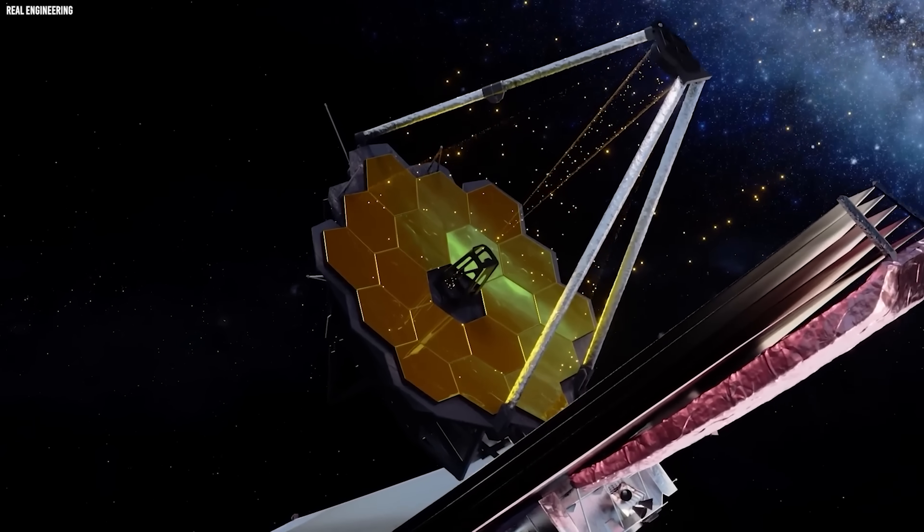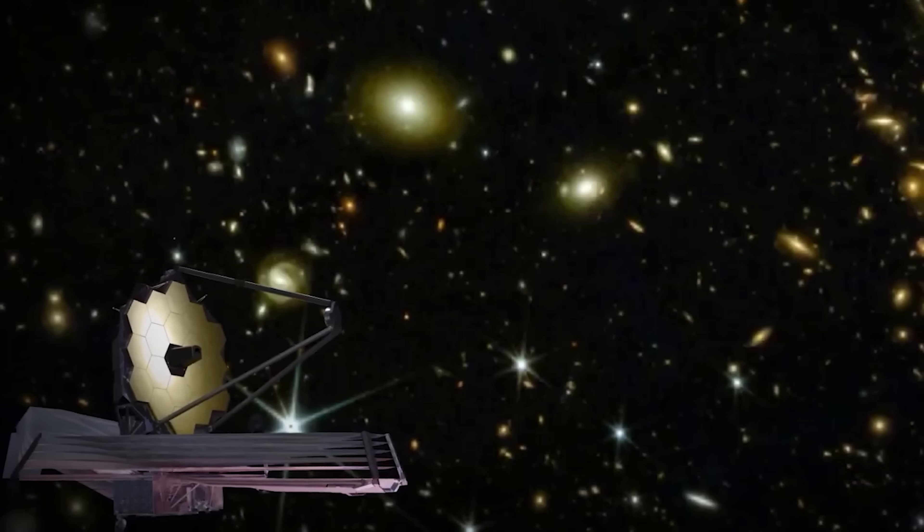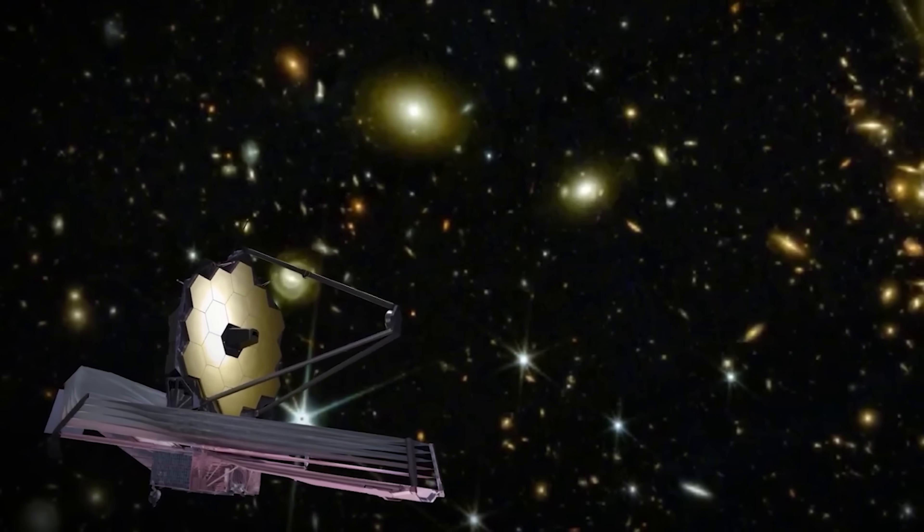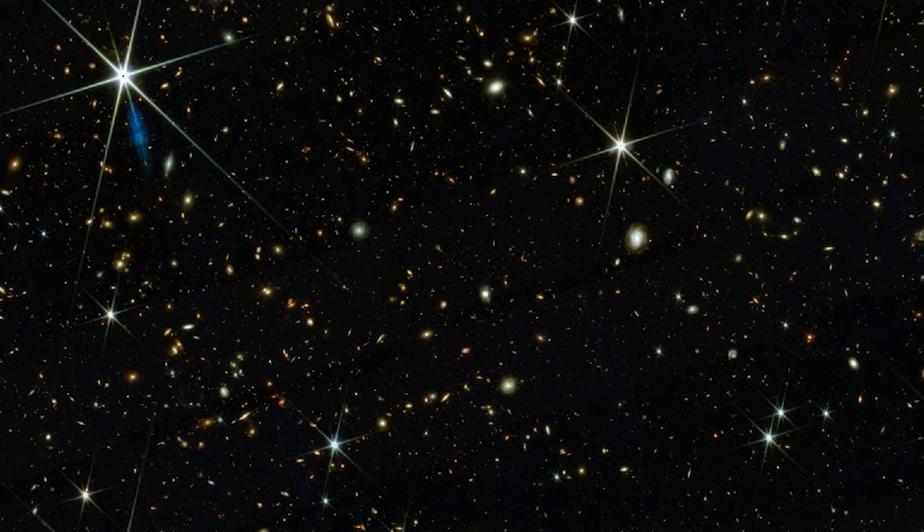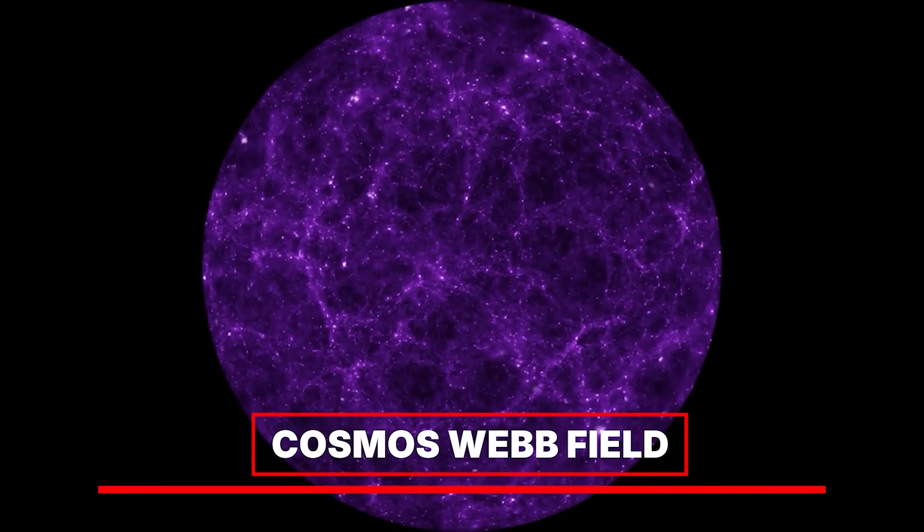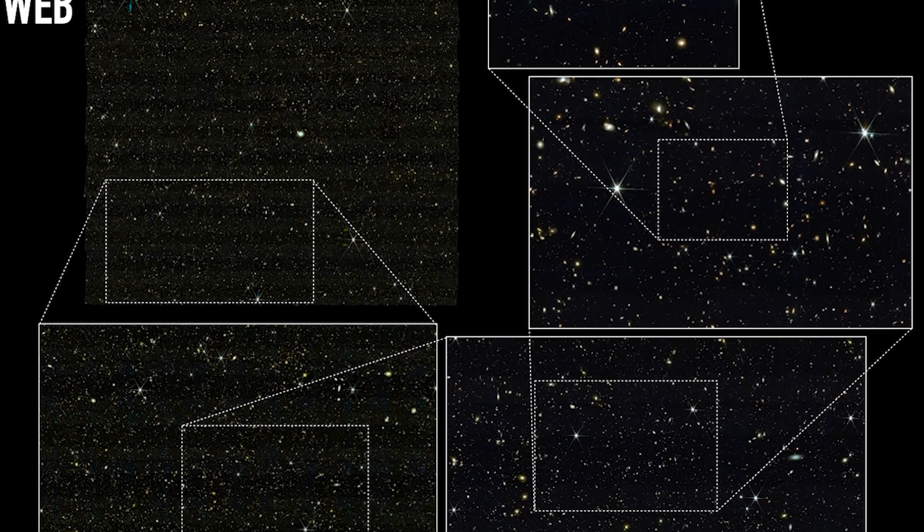Webb opened a completely new window into reality with its very first major observations. In one of its most ambitious surveys, it produced a single, breathtaking image, a map so enormous and detailed that it redefines our place in the universe. This is the Cosmos Webb Field, the most expansive and precise portrait of the cosmos ever assembled.